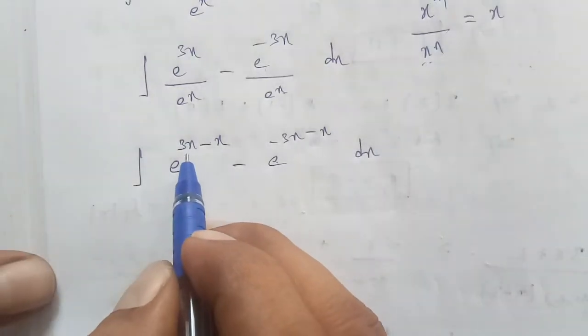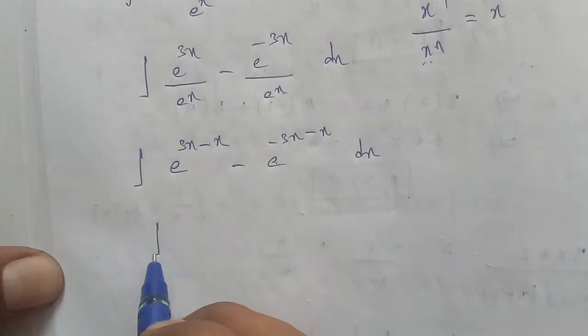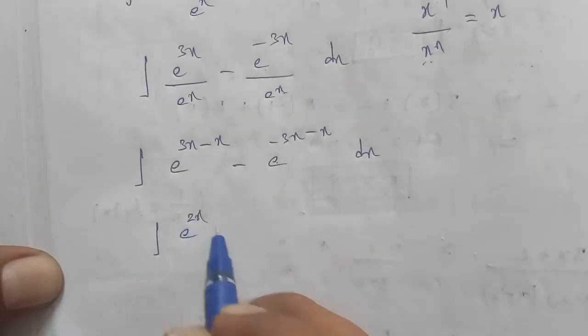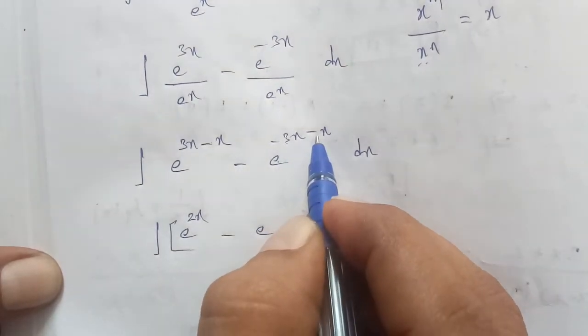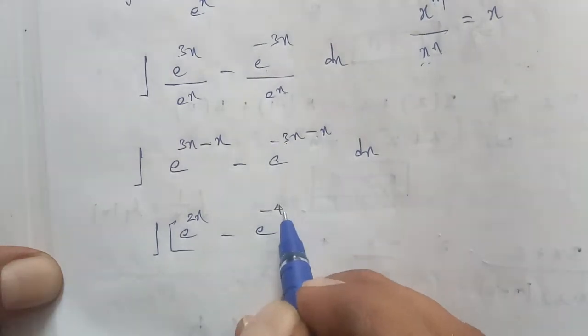So this becomes integral of e^(2x) - e^(-4x) dx.